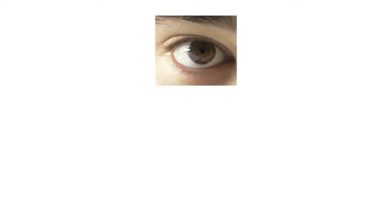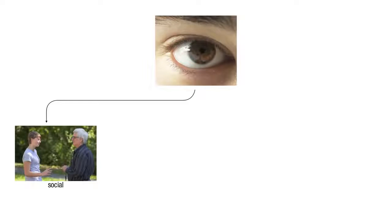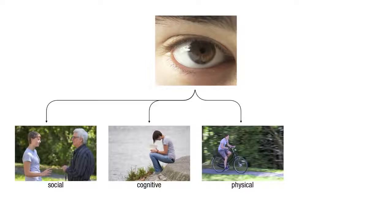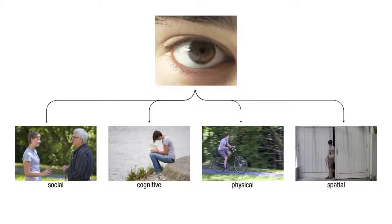We evaluate a proof-of-concept system that is able to infer four binary cues: the social interaction cue (interaction vs. non-interaction), the cognitive cue (concentrated work vs. leisure), the physical cue (being physically active vs. resting), and the spatial cue (being inside or outside).